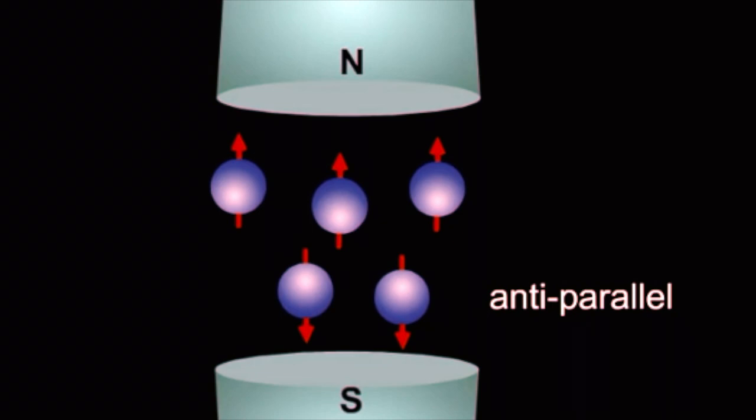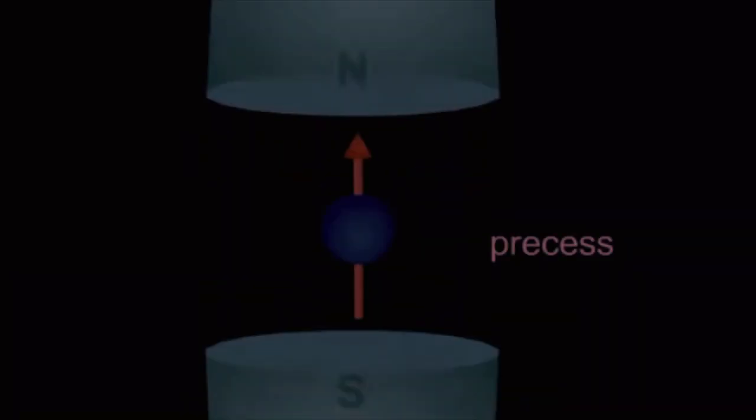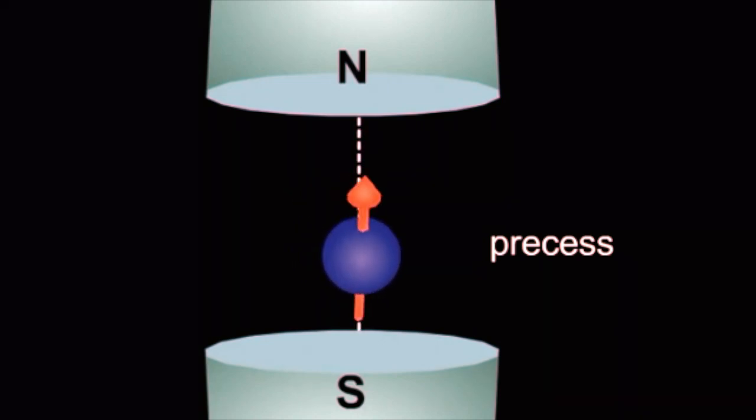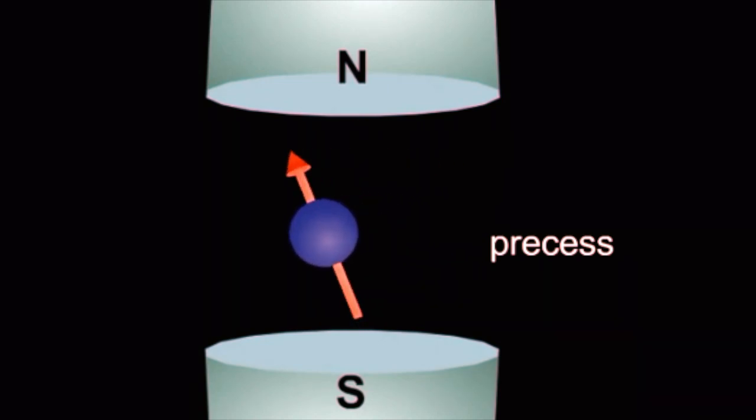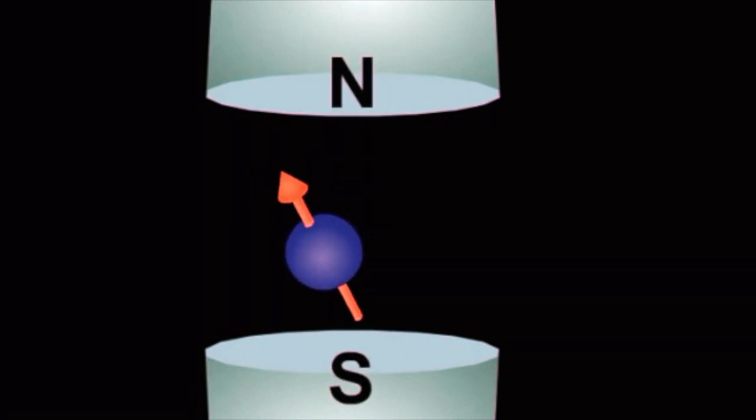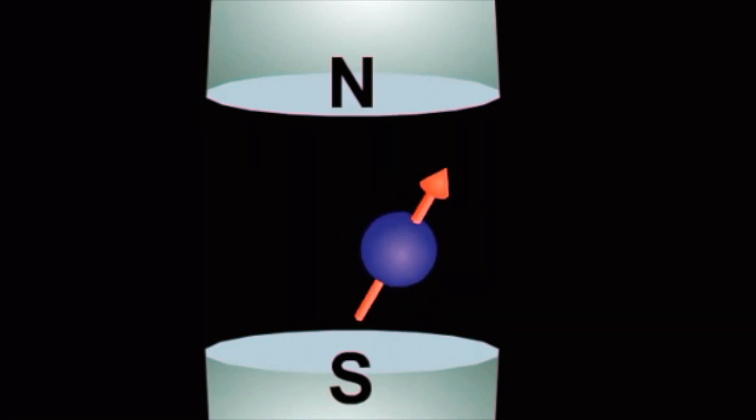The influence of B0 produces an additional spin or wobble of the magnetic moments of hydrogen around B0. The secondary spin is called precession, and the speed at which these magnetic moments wobble around B0 is known as precessional frequency. The value of the precessional frequency is governed by the Larmor equation.